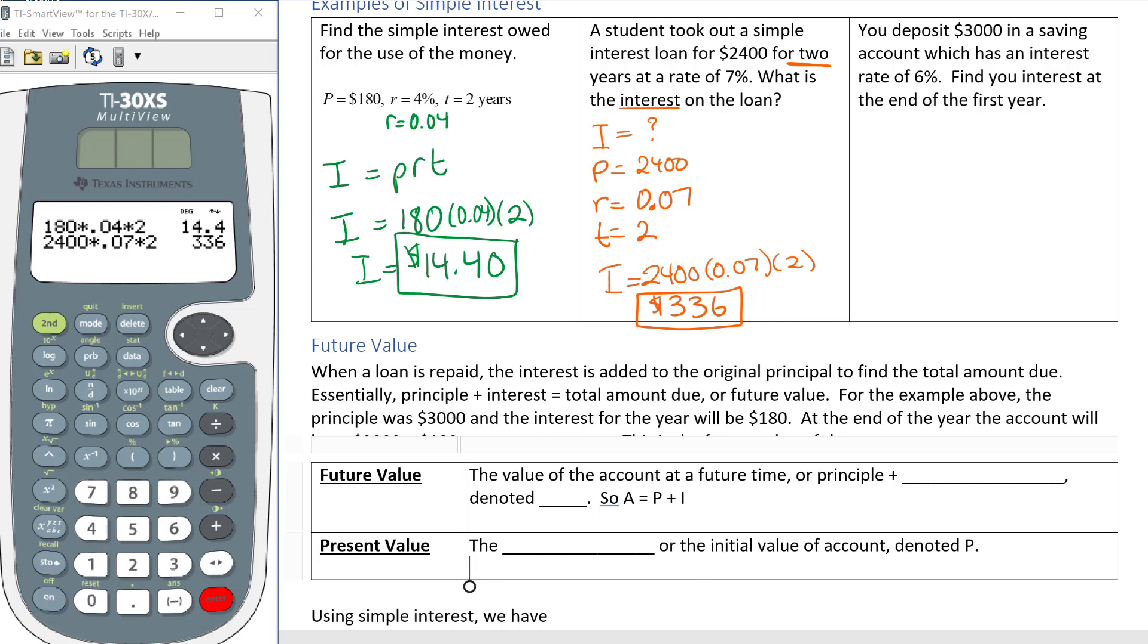Our next example says you deposit $3,000 in a savings account which has an interest rate of 6%. Find your interest at the end of the year. So we need to find I, P, R, and T. The I is the interest rate, it says find your interest so clearly I don't know what that is. P starts with $3,000 that I'm going to deposit in my savings account. My rate is 0.06 and the time, that one's a little tricky, you're going to find the time right here at the very end. It says find your interest at the end of the first year, so I have only one year, T equals 1.